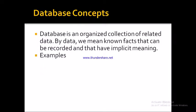So to recap: a database is an organized collection of related data — you can view it as a storage area where data is stored. By data, we mean known facts. The data may be virtual or real-life examples, such as your name, age, date of birth, gender, and Aadhaar number. These are known facts that can be recorded and have some implicit meaning.